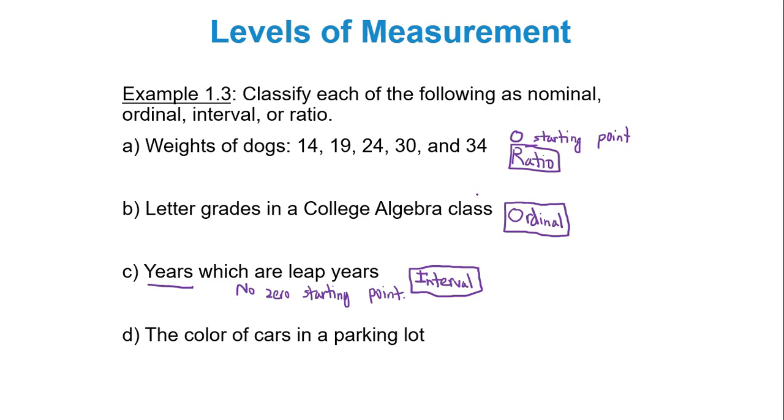Except in the case when a year is divisible by 100, once it's divided by 100 it must also be divisible by 4. Now color of cars in a parking lot. This isn't really numeric. It's just categories or labels and you can't order it. So we're simply just dealing with nominal. So nominal is the most basic.